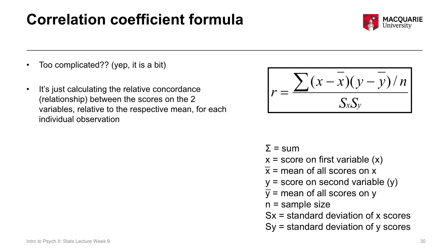What this formula is doing: the concept of a correlation is looking at the co-occurrence of scores on two different variables. Do higher scores on one variable tend to go with higher scores on the other — a positive correlation? Do higher scores on one variable tend to go with lower scores on the other — a negative correlation? If we think of x as our first variable and y as our second variable, all this formula is doing is calculating the difference for each individual score between that score and the average score for x, and that score and the average score for y, then summing that up across all individual scores.